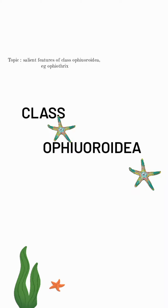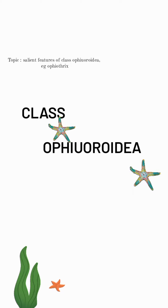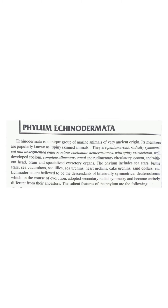Here I am going to deal with the salient features of Class Ophiuroidea and its example Ophiothrix. Class Ophiuroidea is under the phylum Echinodermata. Echinodermata is a unique group of marine animals of very ancient origin. Its members are popularly known as spiny-skinned animals.